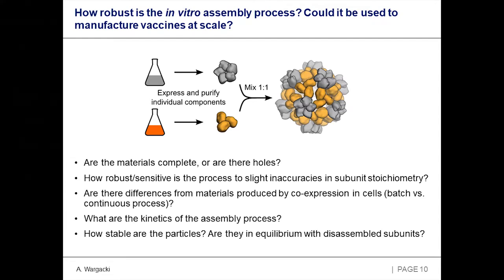To get to know the platform better and really with an eye towards manufacturing, we wanted to ask questions like: what do you get out of this in vitro assembly process? Do you get materials that are complete — is it really 120 subunits or are there holes? Because that's going to be important for manufacturing and licensing. How robust is this process to slight inaccuracies in the one-to-one component ratio? What are the kinetics? How stable are they?